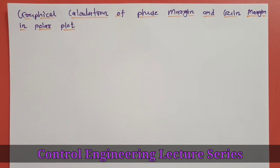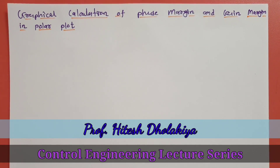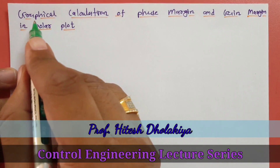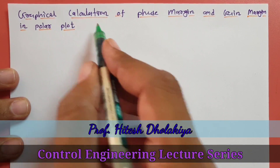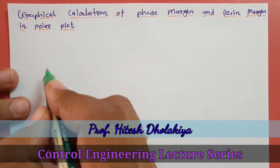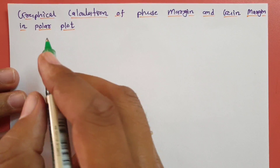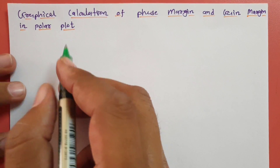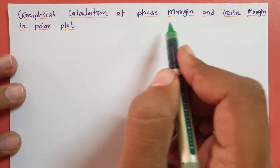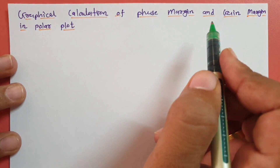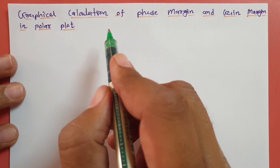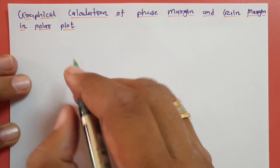Welcome to the control engineering lecture series. Professor Itesh Dholakya is going to explain graphical calculation of phase margin and gain margin in a polar plot. In this video, I'll explain how to identify phase margin, gain margin, as well as gain crossover frequency and phase crossover frequency in a polar plot graphically.